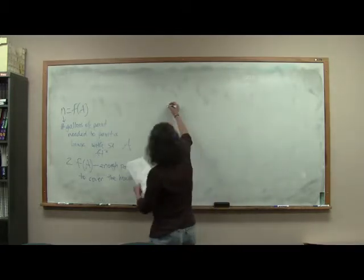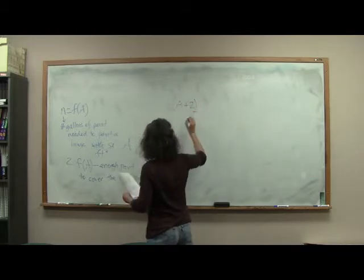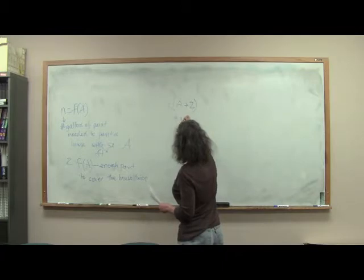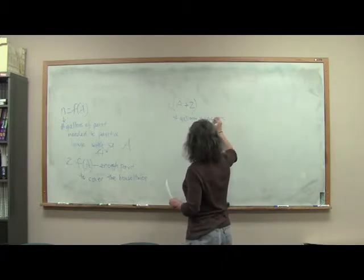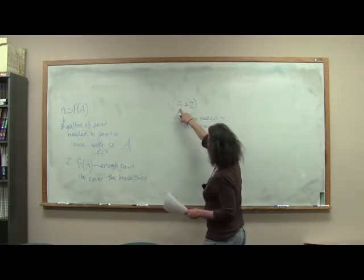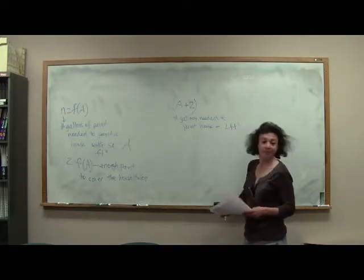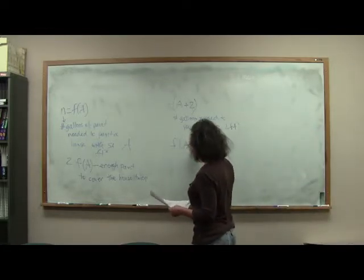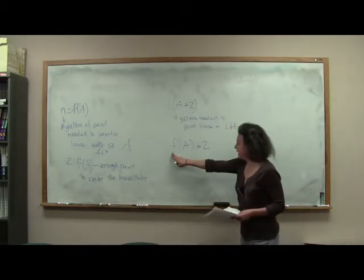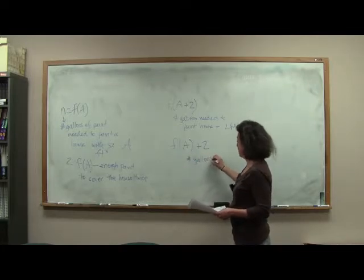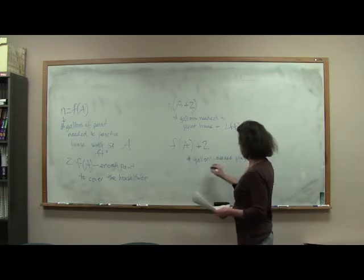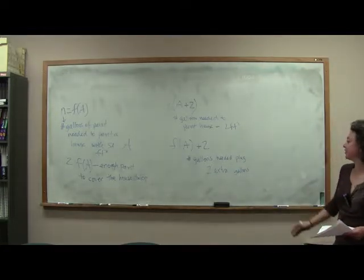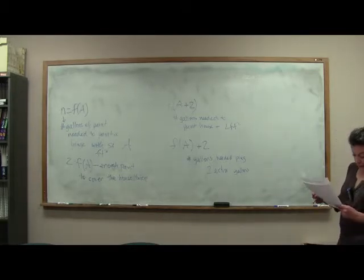Let's contrast that with f of a plus 2. What does f of a plus 2 mean? Well, it's the number of gallons needed to paint the house, that's what a is, plus 2 more square feet. Alright, and last but not least, what does f of a plus 2 mean? Well, again, it's the number of gallons needed plus 2 extra gallons. And you can look at that as a just in case. Alrighty.